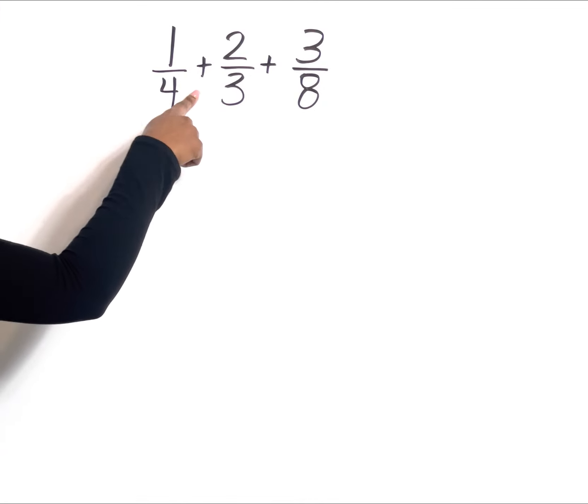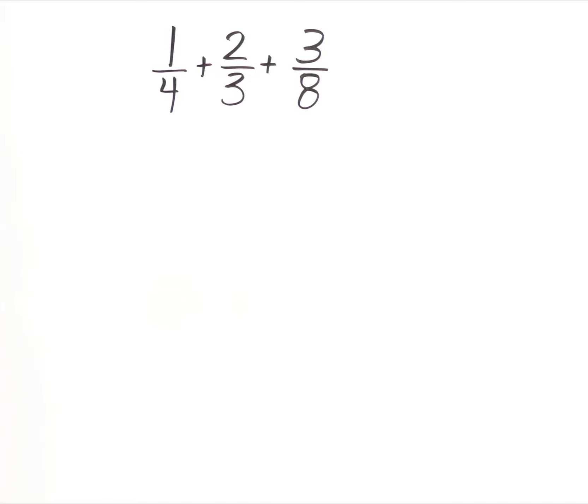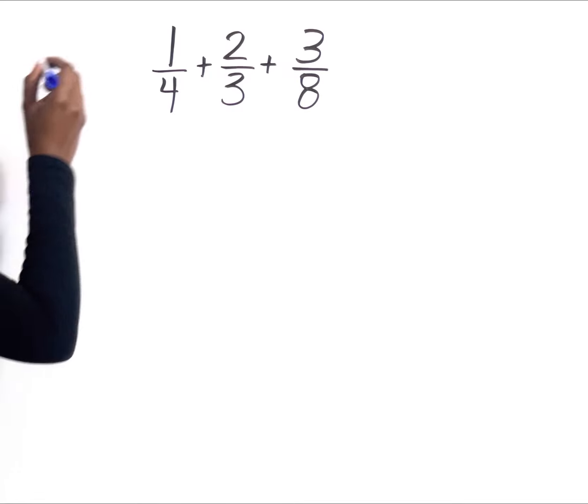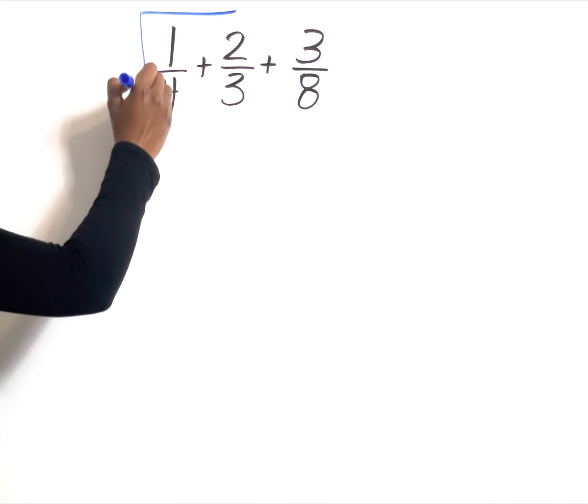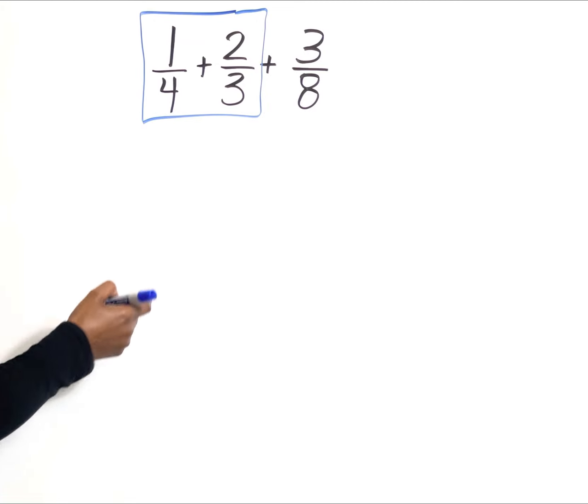In this instance, because we have two addition signs, we're just going to work from left to right. But if the signs were mixed, always make sure you follow your order of operations. That means we are going to combine these two fractions first, and then whatever answer we get, we'll combine it to the 3/8.